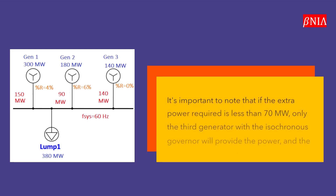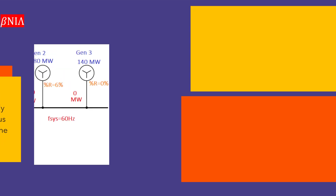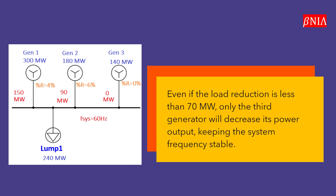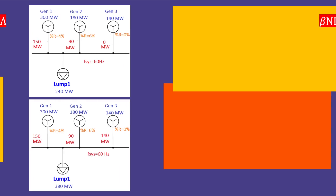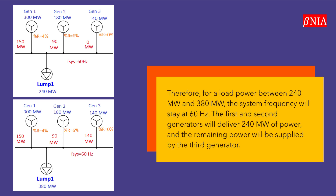It's important to note that if the extra power required is less than 70 MW, only the third generator with the isochronous governor will provide the power, and the system frequency will remain at 60 Hz. Even if the load reduction is less than 70 MW, only the third generator will decrease its power output, keeping the system frequency stable. Therefore, for a load power between 240 MW and 380 MW, the system frequency will stay at 60 Hz. The first and second generators will deliver 240 MW of power, and the remaining power will be supplied by the third generator.